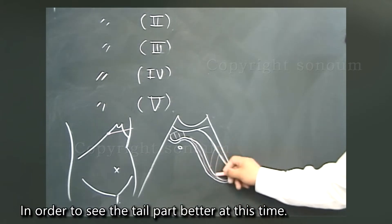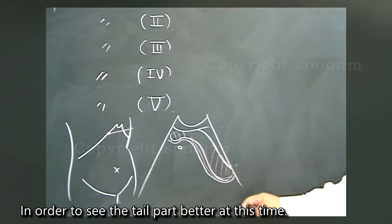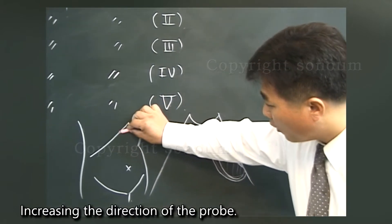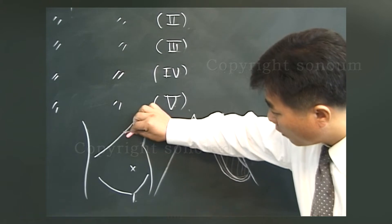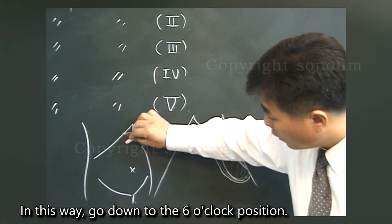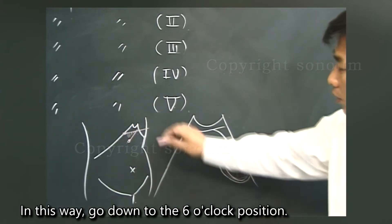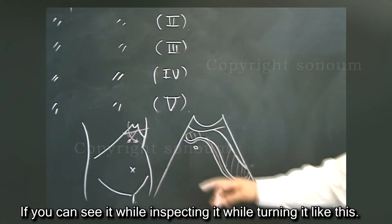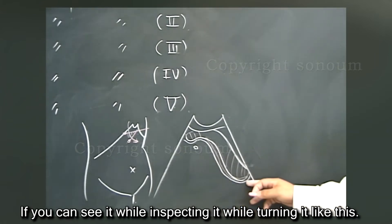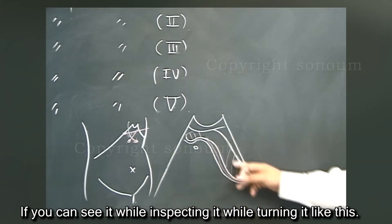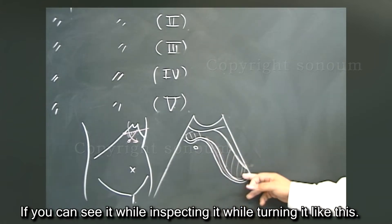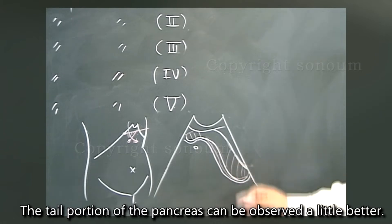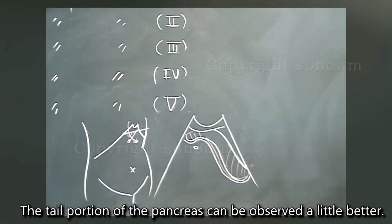In order to see the tail part better, increase the direction of the probe in this way and go down to the six o'clock position. If you can see it while turning it like this, the tail portion of the pancreas can be observed a little better.